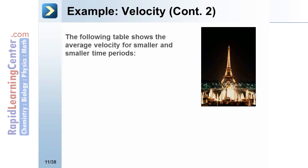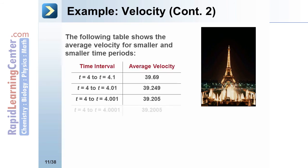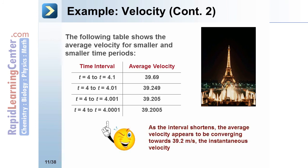The following table shows what would happen to the average velocity if we decrease the time interval. Notice that we go through four different time intervals, with the final time interval running from t = 4 to t = 4.0001 seconds. In that interval the average velocity is 39.2005 meters per second. As the interval shortens, the average velocity appears to be converging towards 39.2 meters per second, which is the instantaneous velocity.